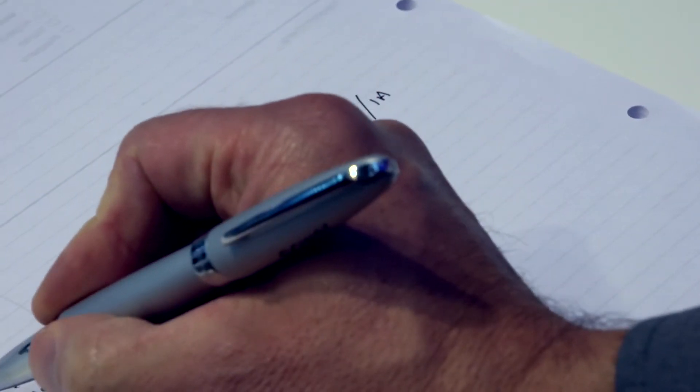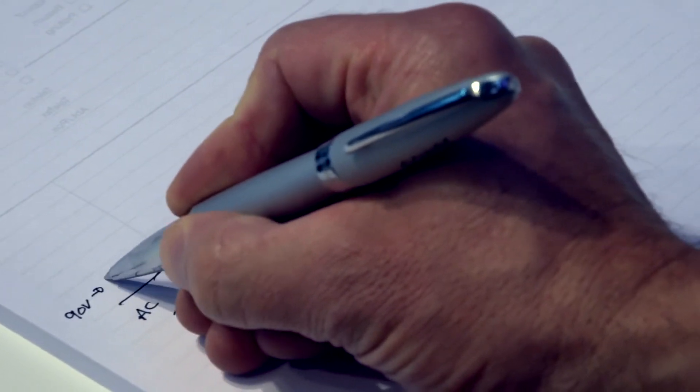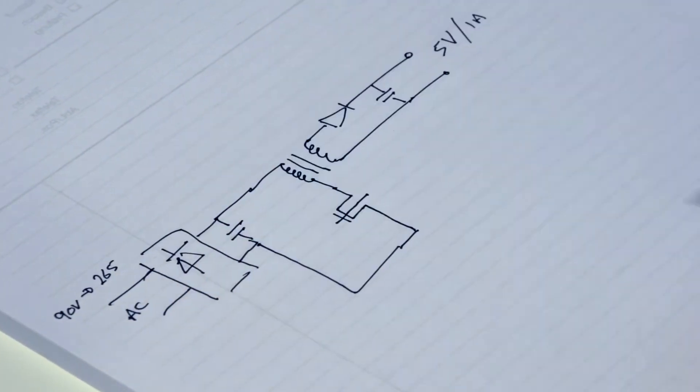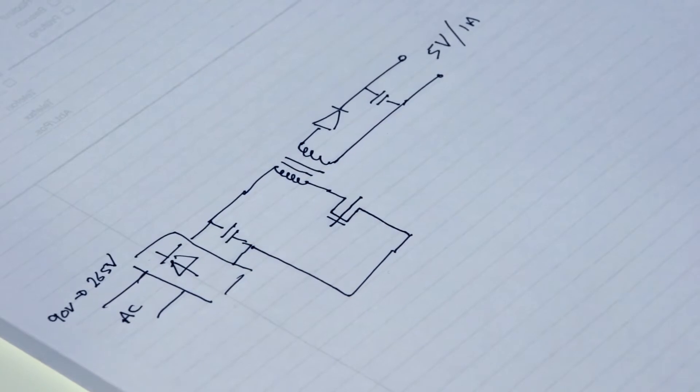and this of course is your AC. So that could be 90 volts all the way up to 265 volts is a typical universal input range.